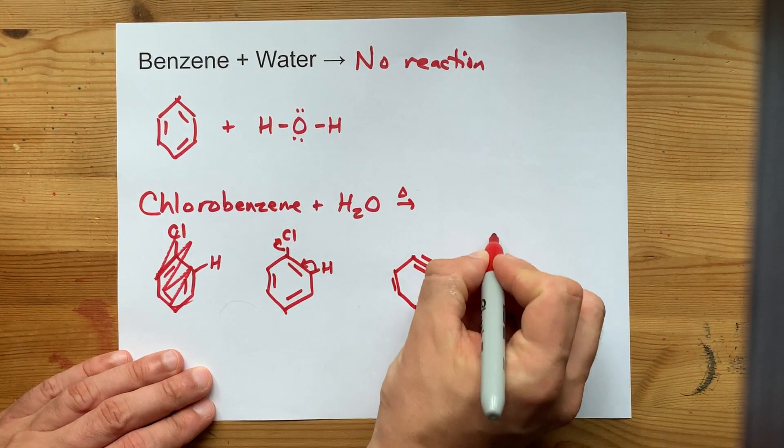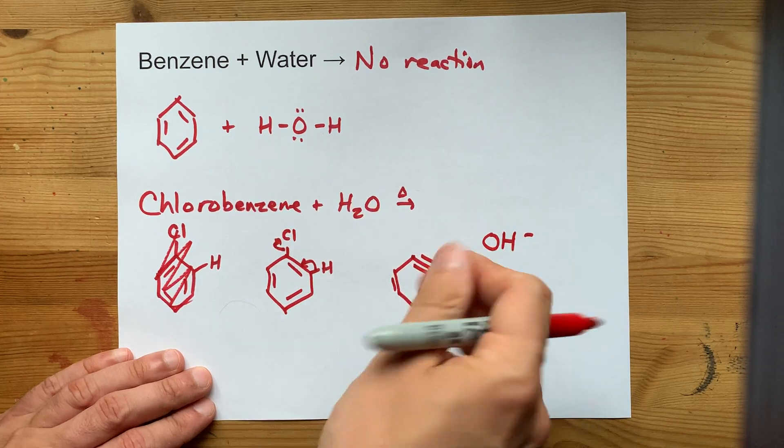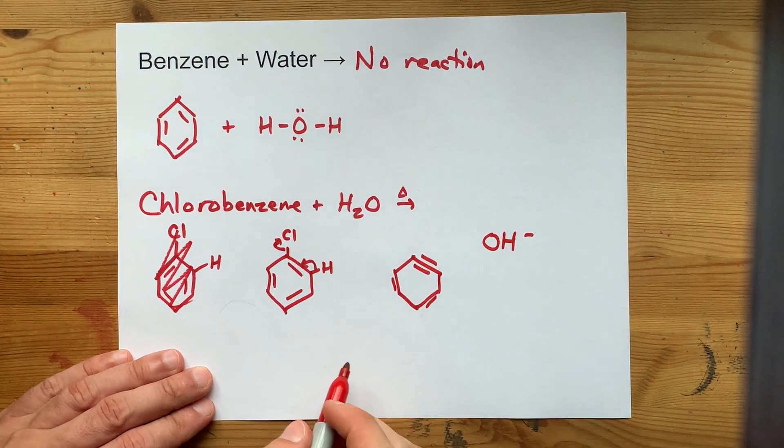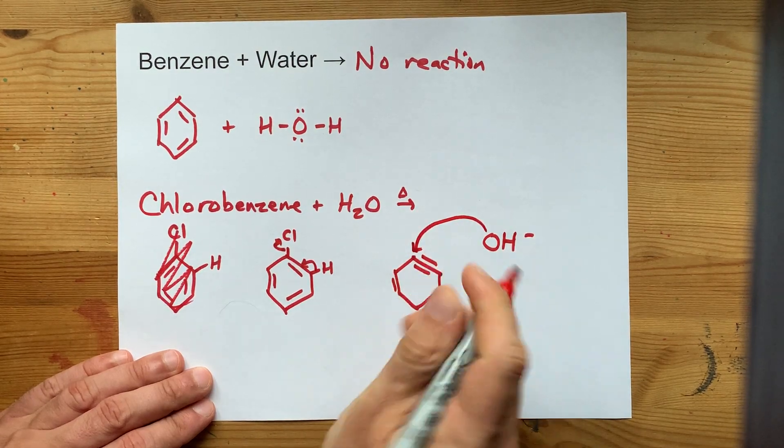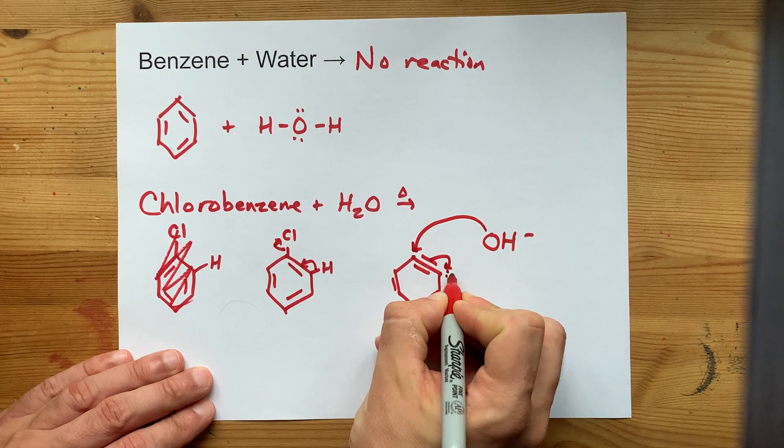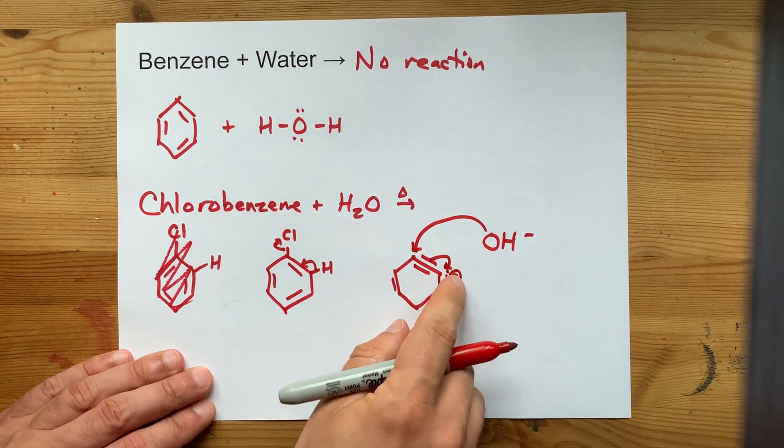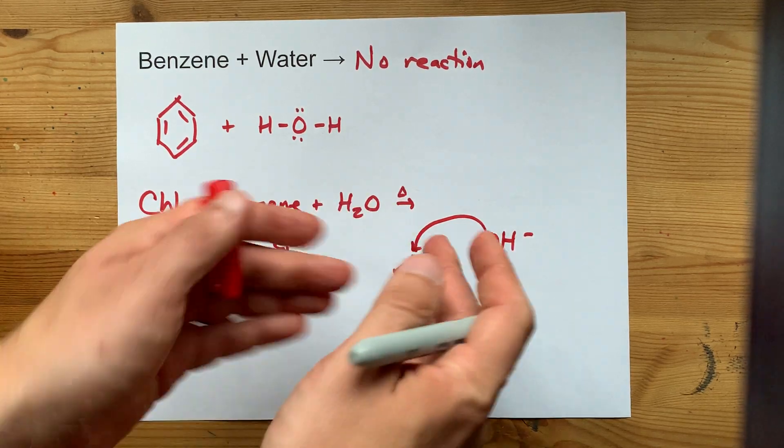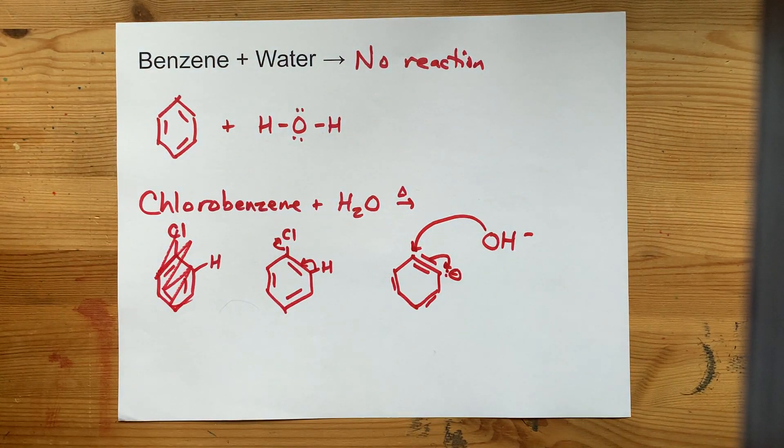Then an OH minus, which will be present in some concentration because you have water, can attack one of those carbons, displace the electrons to form a carbanion, and then that steals the H plus back from one of the waters that it's around as well.